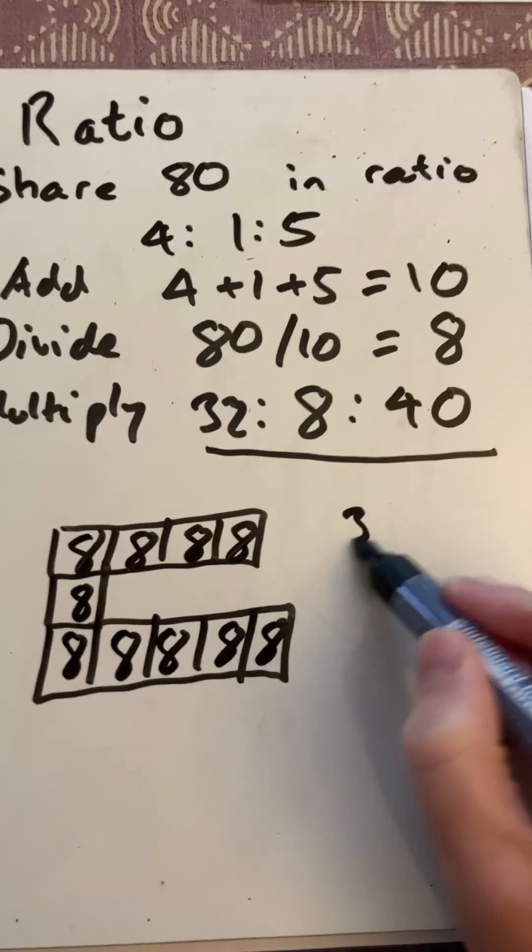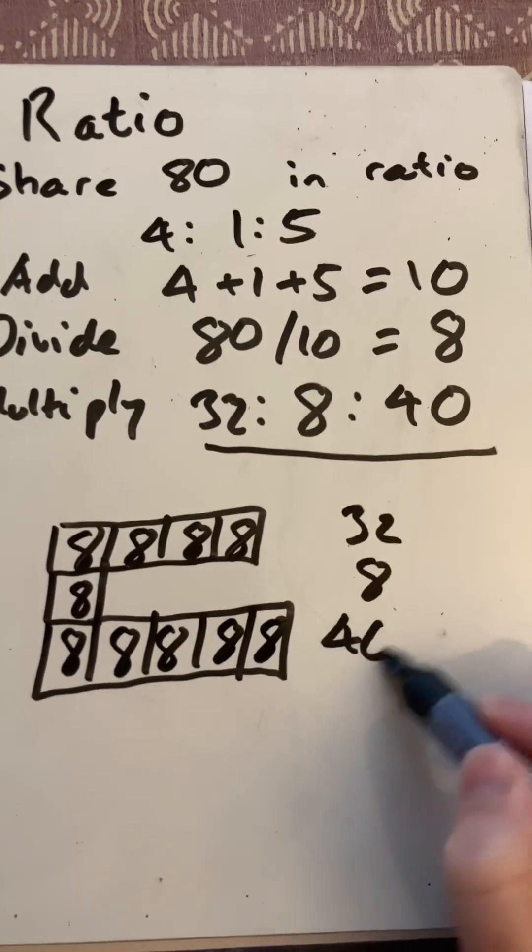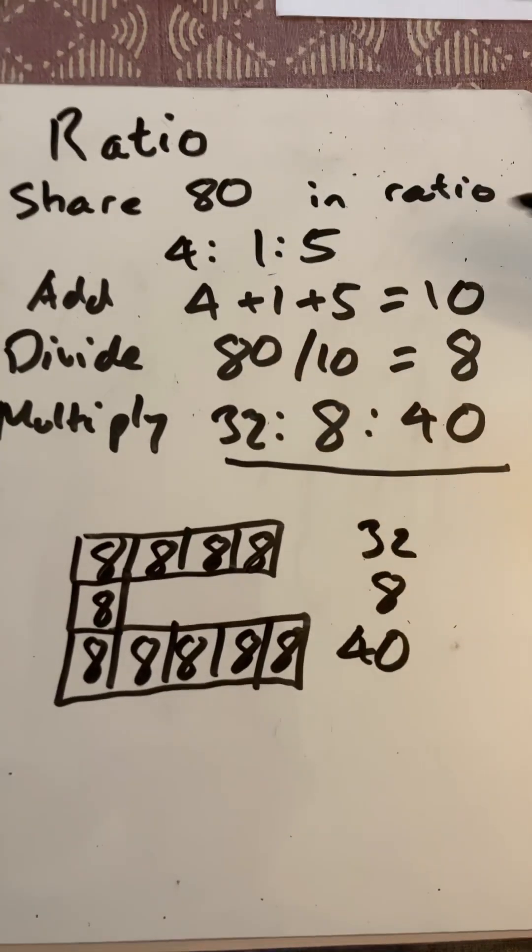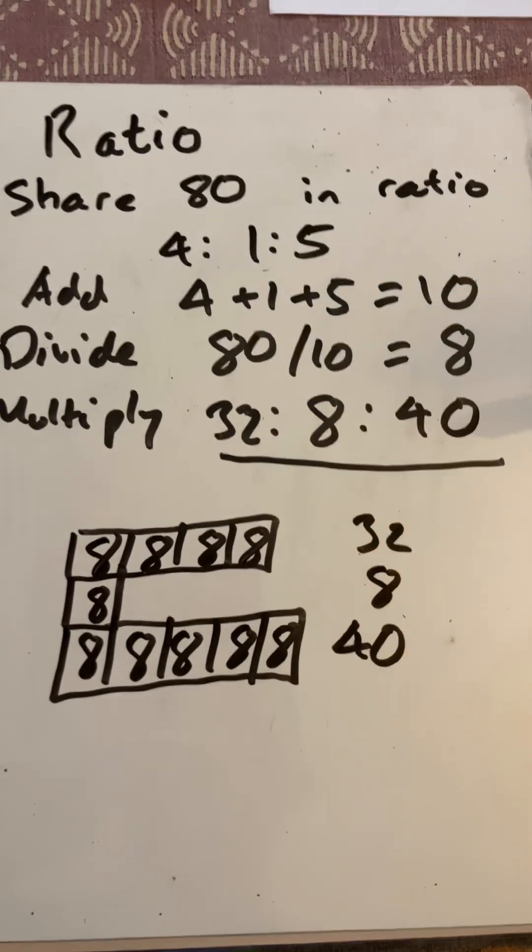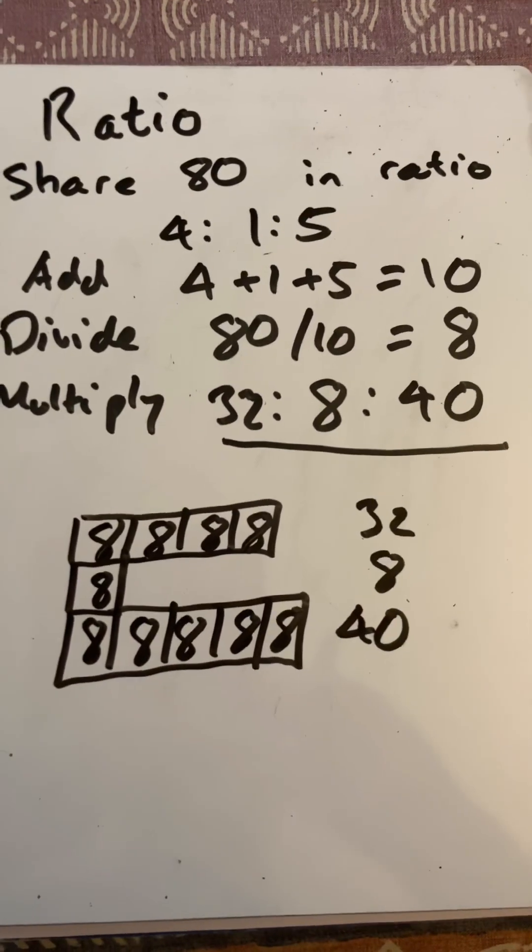So 4 parts is 32, 1 part is 8, and 5 parts is 40. I've shared the amount 80 in the ratio 4:1:5 as 32, 8, and 40. That's Martin Maths. Thanks for watching.